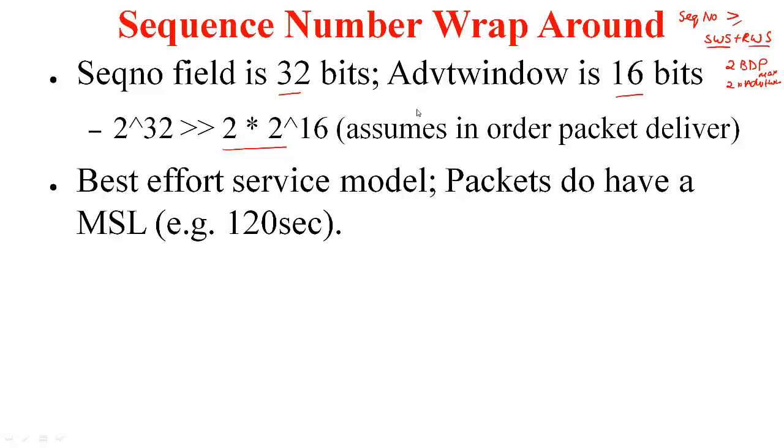When we were covering the sliding window protocol, we assumed that packets get delivered in order. In other words, if you put one, two, three in the pipe, they will reach the other end in the same order 123. If you put 213, they will also receive in the order 213. Whatever order you put the packets in, it's the same order the receiver is going to receive.